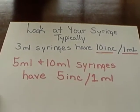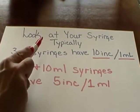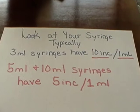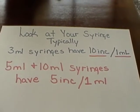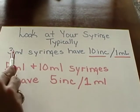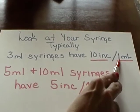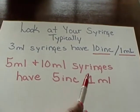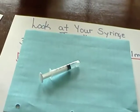You need to determine what size syringe you need, get your syringe, and look at it. This is important because different size syringes will have different numbers of increments. By increments we mean the small black lines — the number of them contained within one milliliter. Typically a three milliliter syringe has ten increments per one milliliter, and typically a five and ten milliliter syringe has five increments per one milliliter. It's important that you actually get your syringe and count your increments per milliliter.